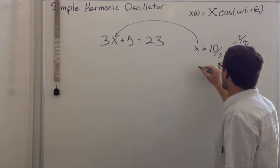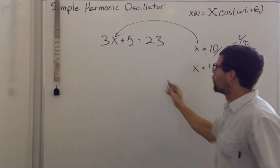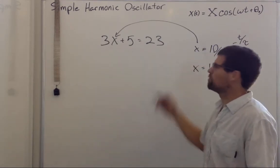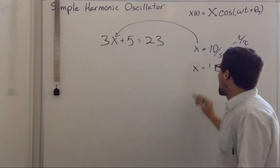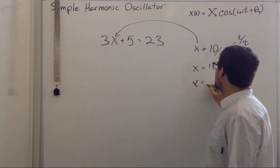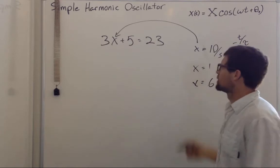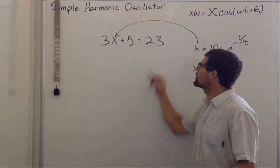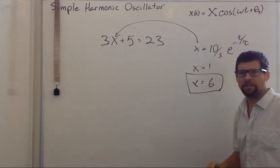How about if we try x equals 1? We put 1 in there. 3 times 1 is 3 plus 5 is 8, 8 doesn't work. How about if we try x equals 6? 6 times 3 is 18 plus 5 is 23. That must be right.